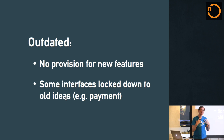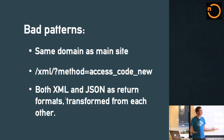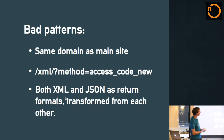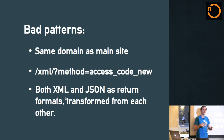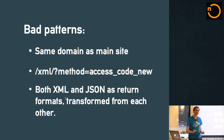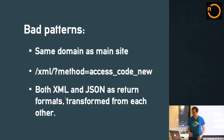Some of the problems with API v1, our current public API: it was outdated. The code was all pre-Django, because we moved to Django three or four years ago. There was no provision for new features. There were interface and design ideas around URLs and methods that were locked down to how Eventbrite worked five or six years ago — things like payment methods, repeating events, all that kind of stuff. There are also some bad patterns: it was on the same domain as the main site. Methods were accessed as eventbrite.com/xml?method — not perfect. And both the XML and JSON return formats transform each other, which is a great idea in theory until one of them turns out incorrect — resulting in both malformed XML and poorly written JSON.